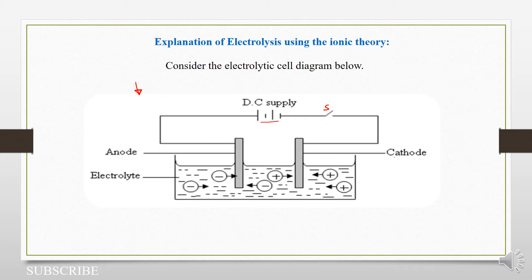we have the cathode which is negatively charged and it's always connected to the negative terminal, which is the shorter one. This side we have the positive terminal and it's always connected as well to our anode, which is positively charged.